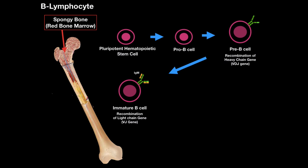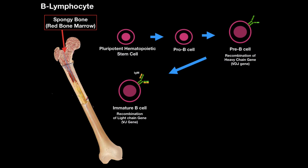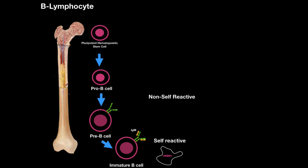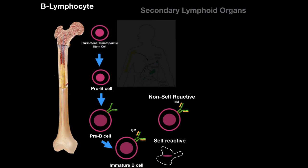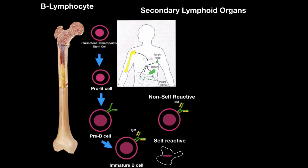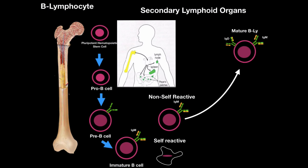There are control points throughout development, and if Ig components are lacking, the cell undergoes apoptosis. If the immature B cell reacts to our own tissue, it attempts rearrangement to fix it, but if it still reacts to self-tissue, it undergoes apoptosis — we don't want antibodies targeting our own tissue. If it's non-self-reactive, it travels to secondary lymphoid organs — spleen, lymph nodes, and Peyer's patches in the intestines — and becomes a mature B-lymphocyte expressing IgD and IgM. A mature B cell then circulates between lymph, blood, and secondary lymphoid tissue.